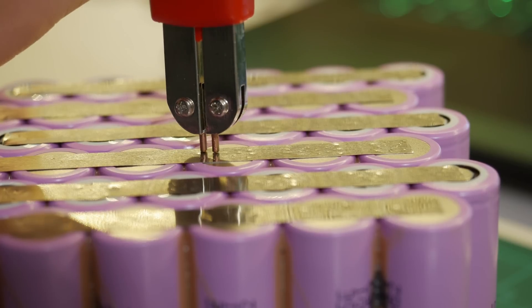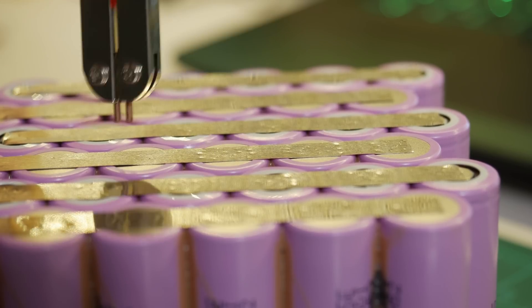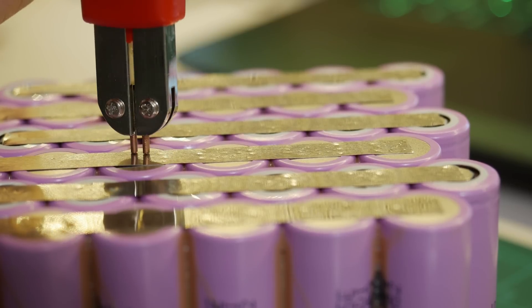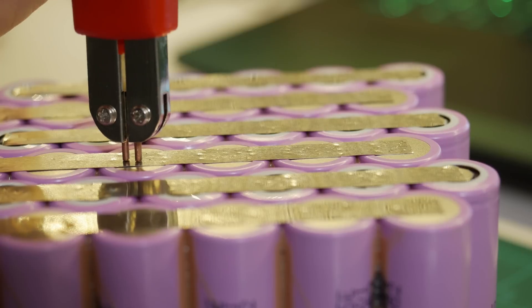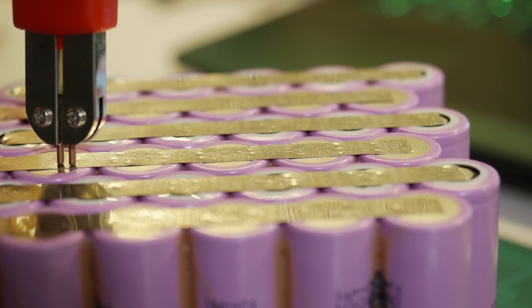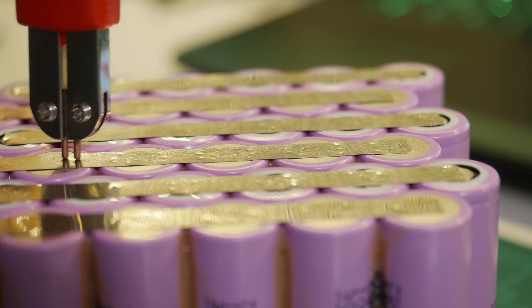For this step you can also solder wires to the cells but you would need a powerful soldering iron, at least 100W and great care must be taken to solder very quickly so as not to overheat the cells which will ruin them. With a powerful soldering iron, 2-3 seconds should be more than enough.